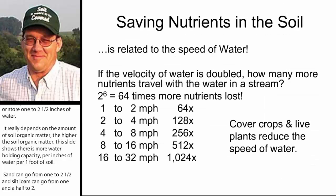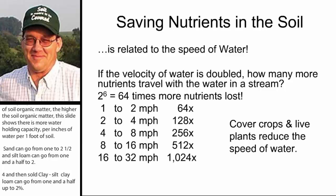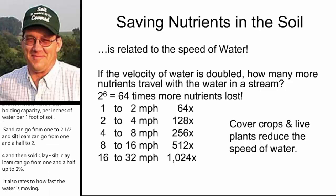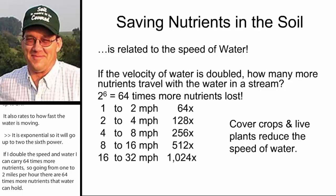It's also related to how fast the water is moving — and it's exponential, going up to the sixth power. If I double the speed of water, I can carry 64 times more nutrients. Going from one to two miles per hour means 64 times more nutrients that water can hold. Some of our streams are now moving at 16 to close to 30 miles per hour. We see a lot of flashiness there, and that's over a thousand times more nutrients. Cover crops and live plants slow that water down so it drops its load.